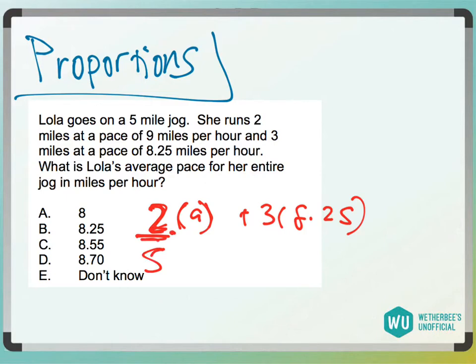So she's doing 2 fifths at 9 miles per hour, and then she's doing 3 fifths at a rate of 8.25 miles per hour.